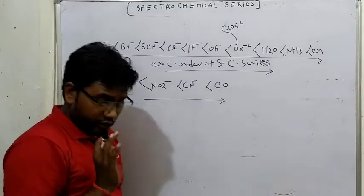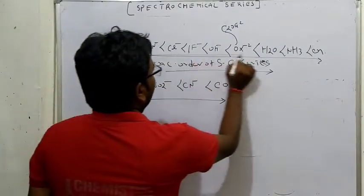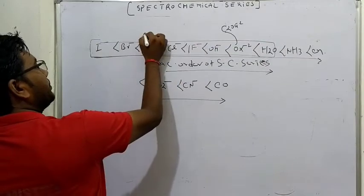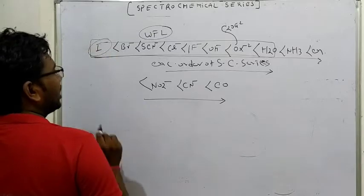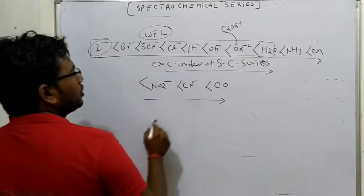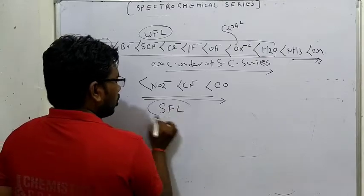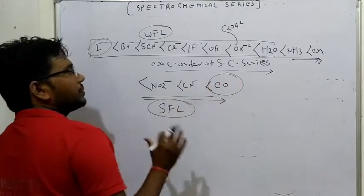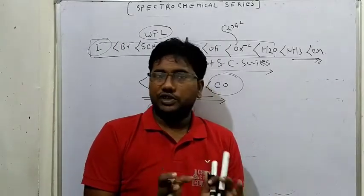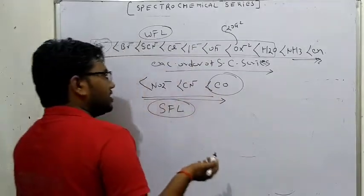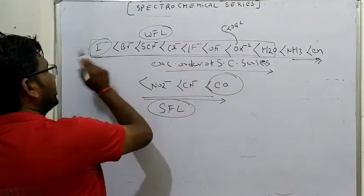यह लिखना पड़ेगा और इसके बारे में बहुत सारे questions होंगे। Iodine की सबसे कम splitting होगी - सबसे कम low splitting इसकी होगी। और Ammonia से जो ligands आगे आते हैं - EN, NO₂⁻, CN⁻, CO - यह सबके सब आपके Strong Field Ligands हैं। सबसे ज्यादा Strong Field Ligand CO है। Iodine आपका Weak Field Ligand है।